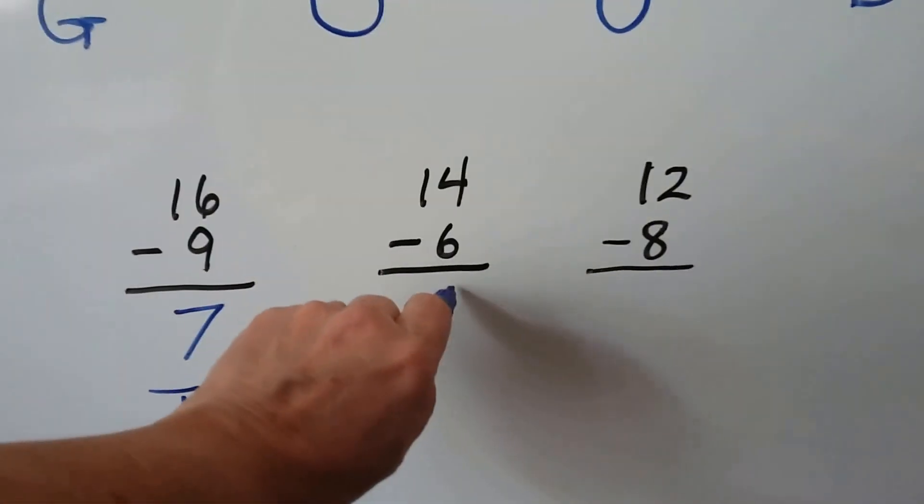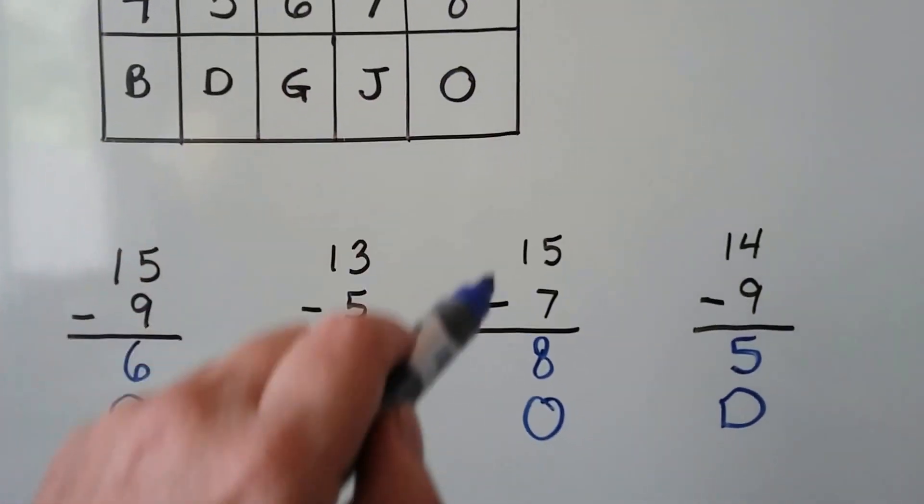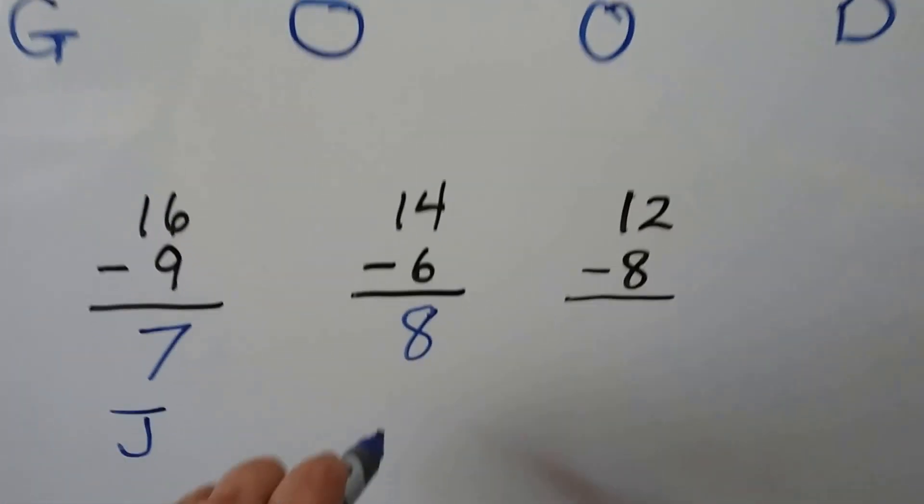So 14 minus 6 is 8. We look up the 8 and we see it's an O.